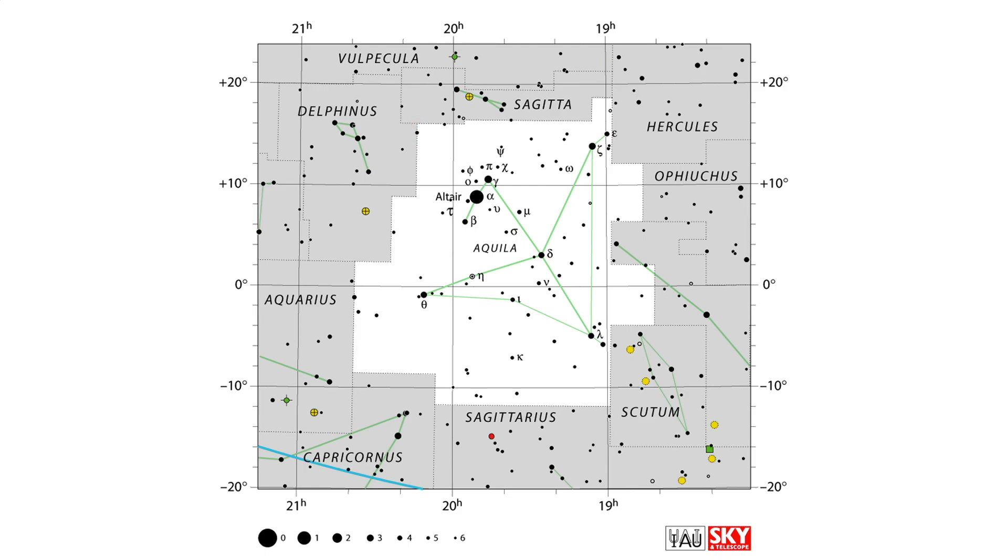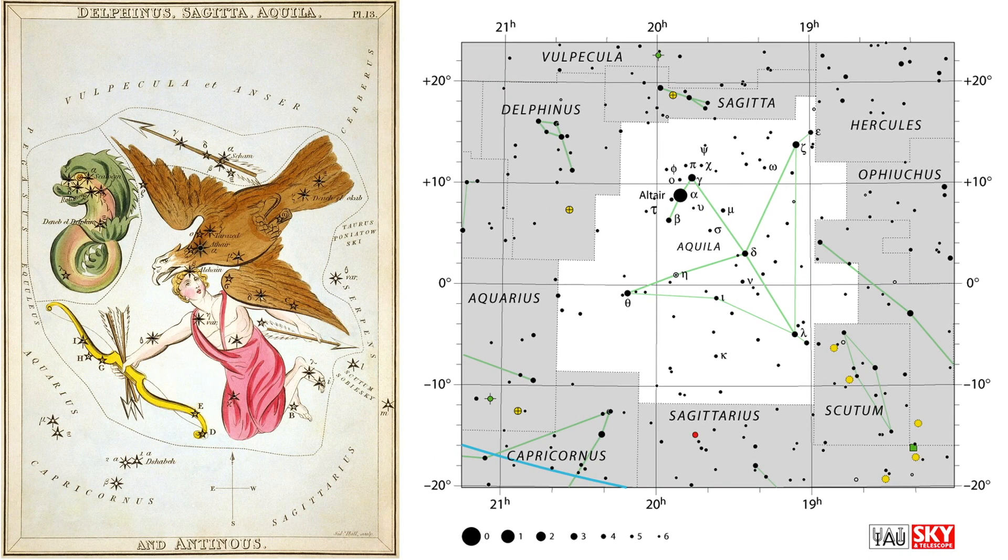With this nomenclature in mind, we take a look at the constellation Aquila, the eagle, and take note of this star found just on the border between Aquila and its neighboring constellation Delphinus, the dolphin.